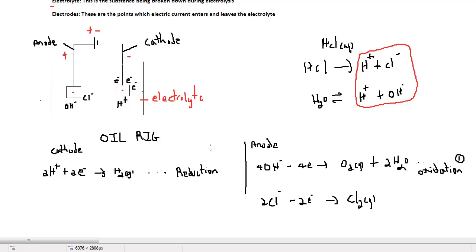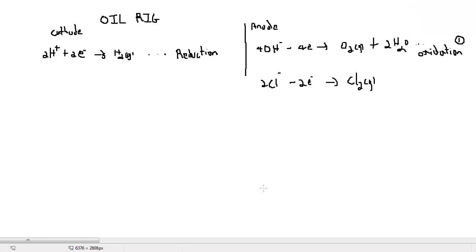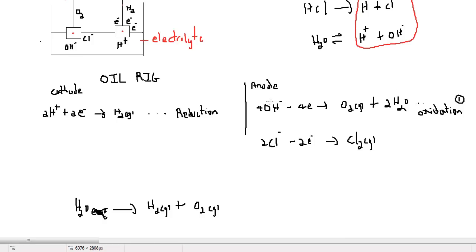For the electrolysis of aqueous hydrogen chloride, we will see oxygen gas coming off at the anode and hydrogen gas coming off at the cathode. This breaks down the water molecule into hydrogen gas and oxygen gas, rather than the hydrogen chloride molecule, because the hydroxide ions take preference over the chloride ions as they are lower down the reactivity series.